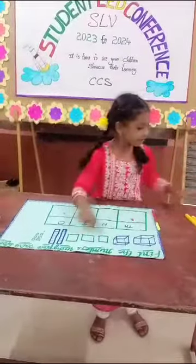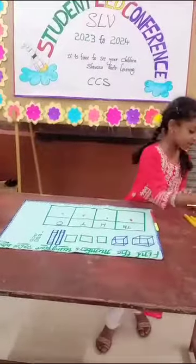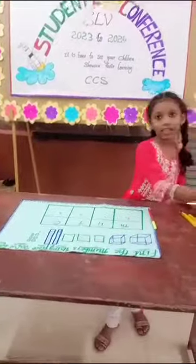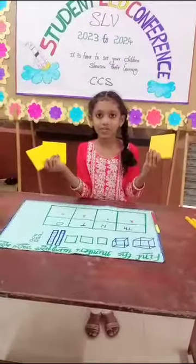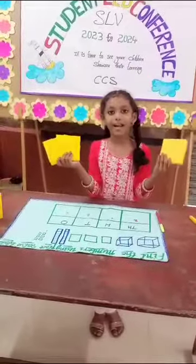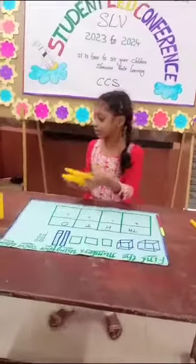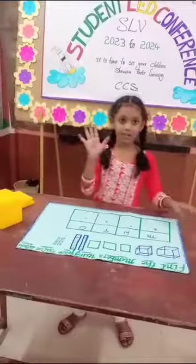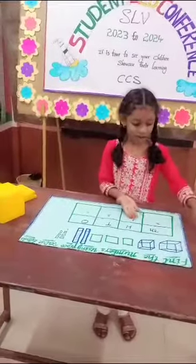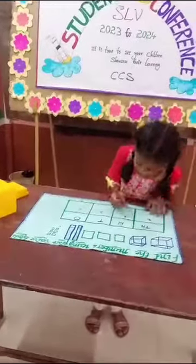I have 3 flags. So I will take 3 flags. They represent the hundreds place. So I will write 3 in the hundreds place.